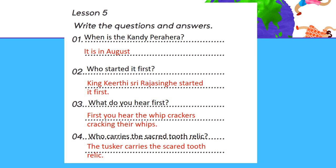When is the Kandy Perahera? It is in August. Who started it first? King Keerthree Shree Rajasinger started it first. What do you hear first? First you hear the whipcrackers cracking their whips.